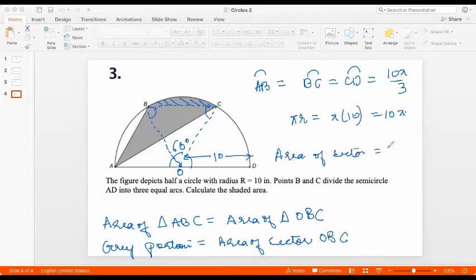And so the area of that sector will be 60 by 360 into pi r squared. So that would be 1 by 6 into pi and radius we already saw was 10, 1 by 6 into 100. So that comes to 50 pi by 3. So the area of the shaded portion is 50 pi by 3 units.